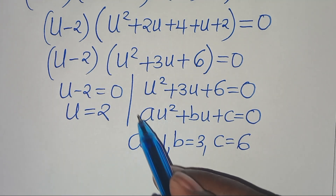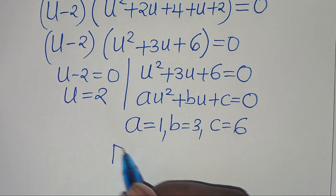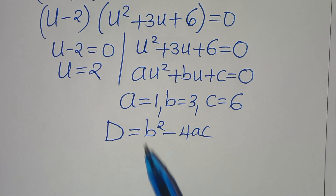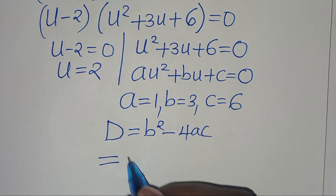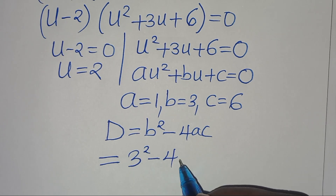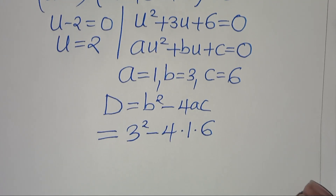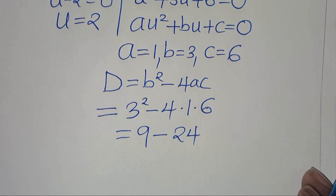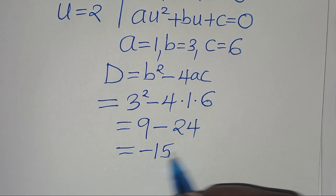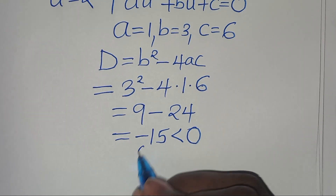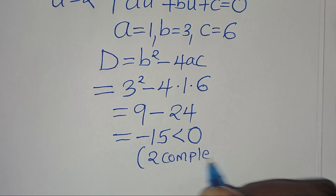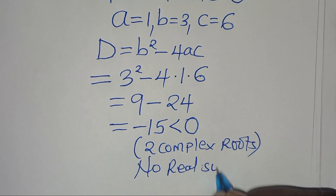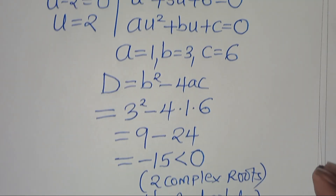To assess the nature of the roots of this quadratic, we calculate the discriminant: b² - 4ac = 3² - 4(1)(6) = 9 - 24 = -15, which is less than 0. This means there are two complex roots and no real solution from this quadratic equation.